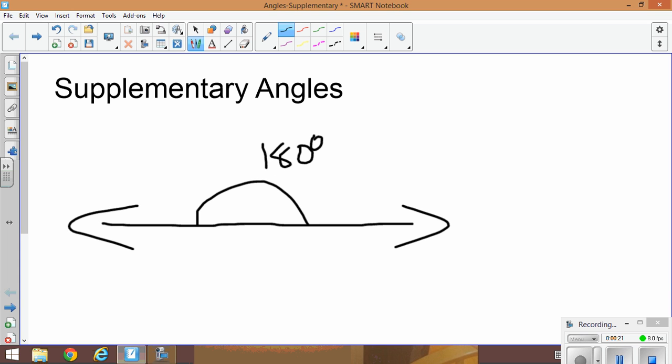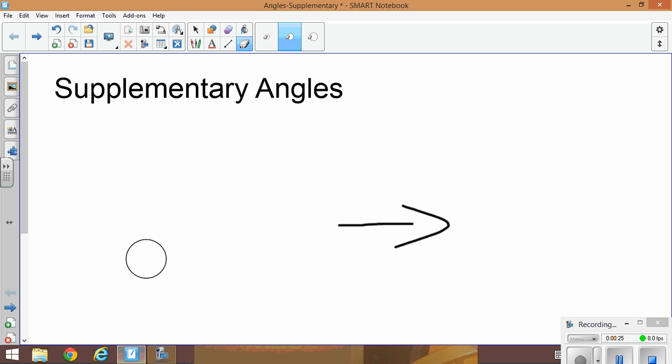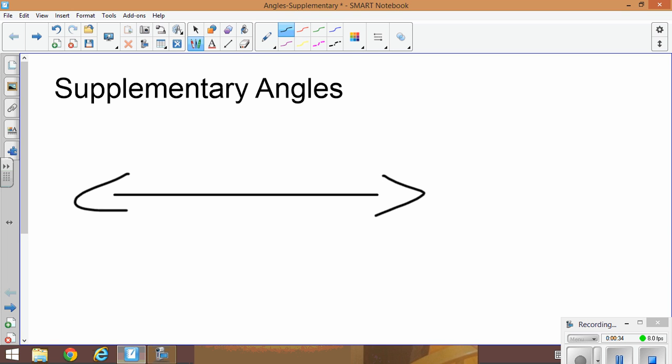Okay, so what I want to take a look at today is what if we take this straight line and we have another line intersect it. Say here's the center and it intersects as such. It creates two angles: here's angle one and here's angle two. So say angle two measures 40 degrees.